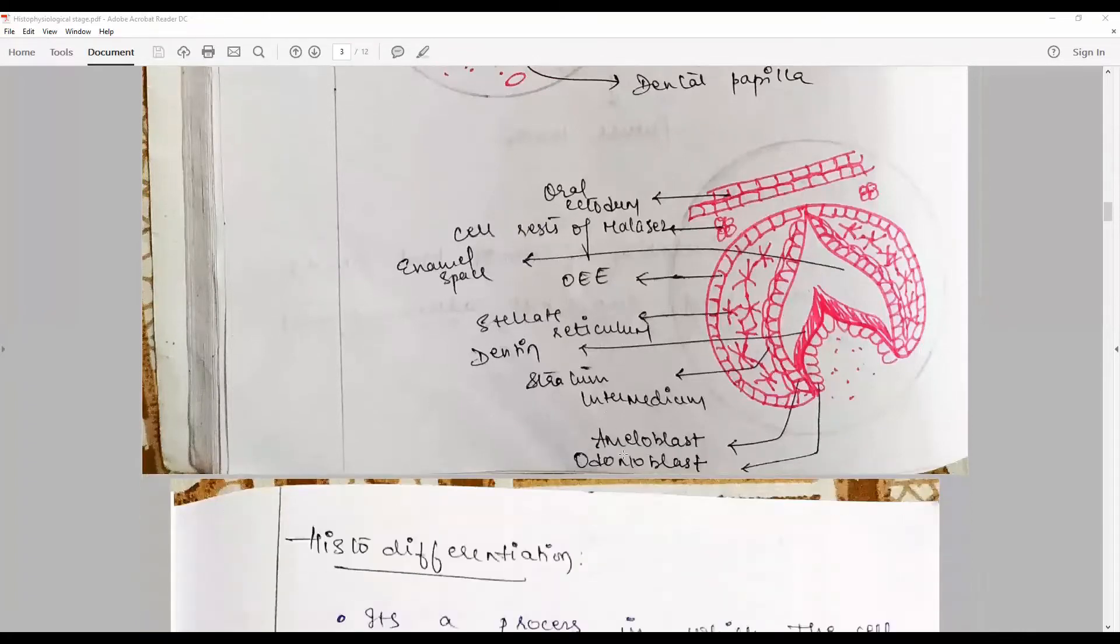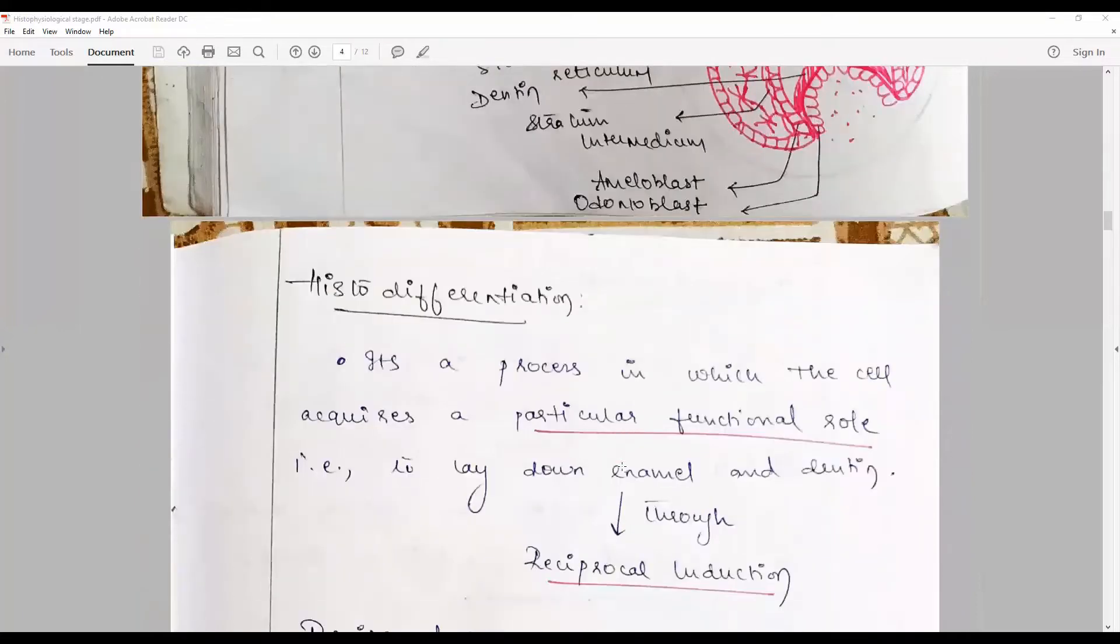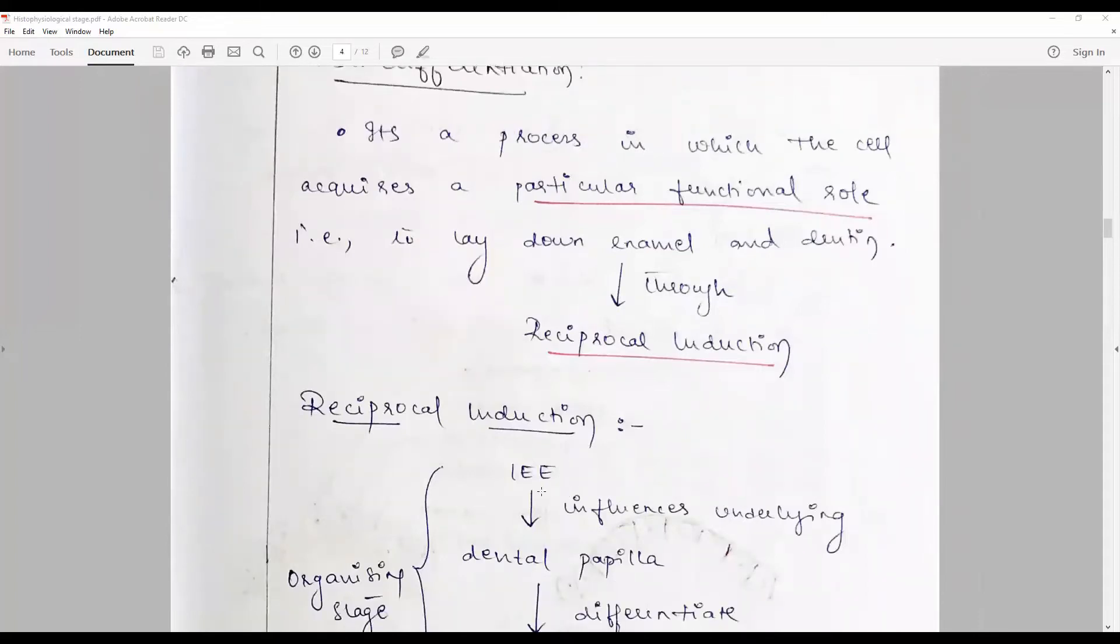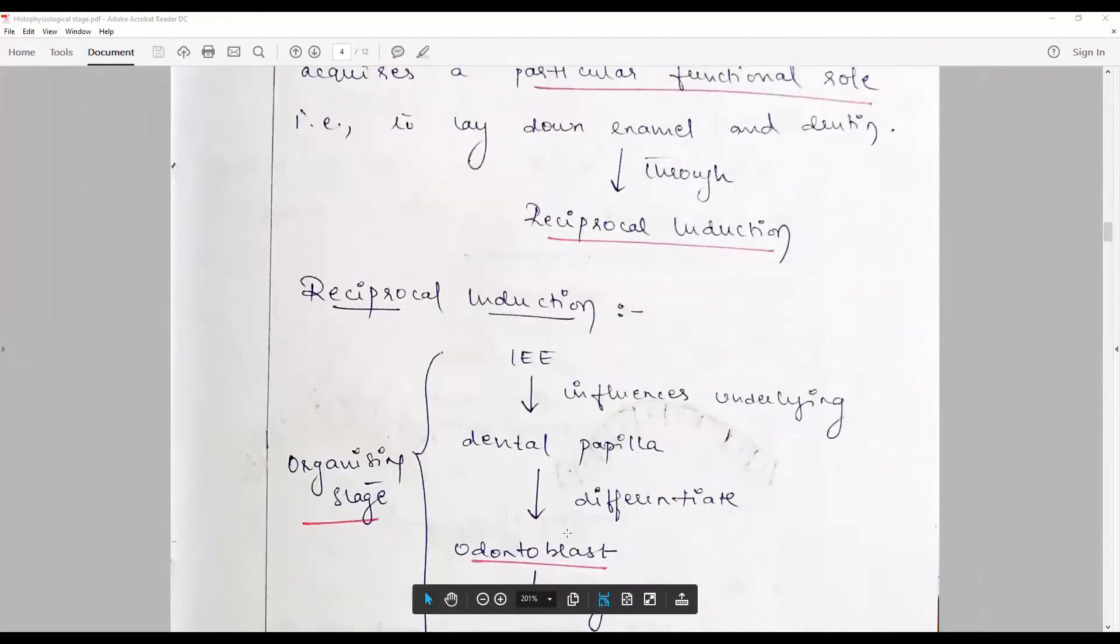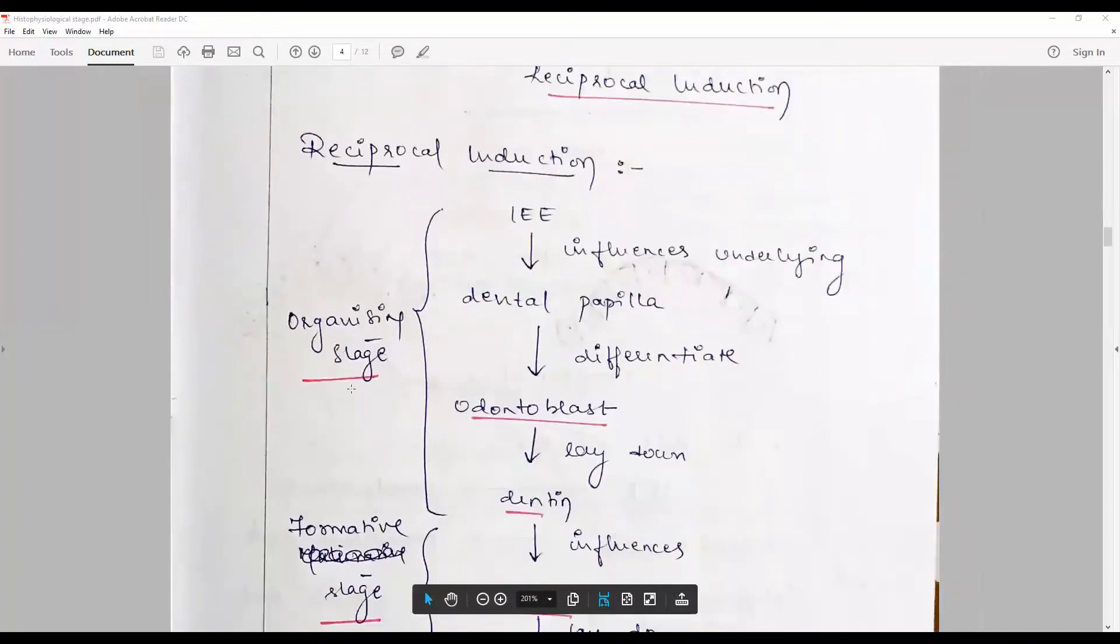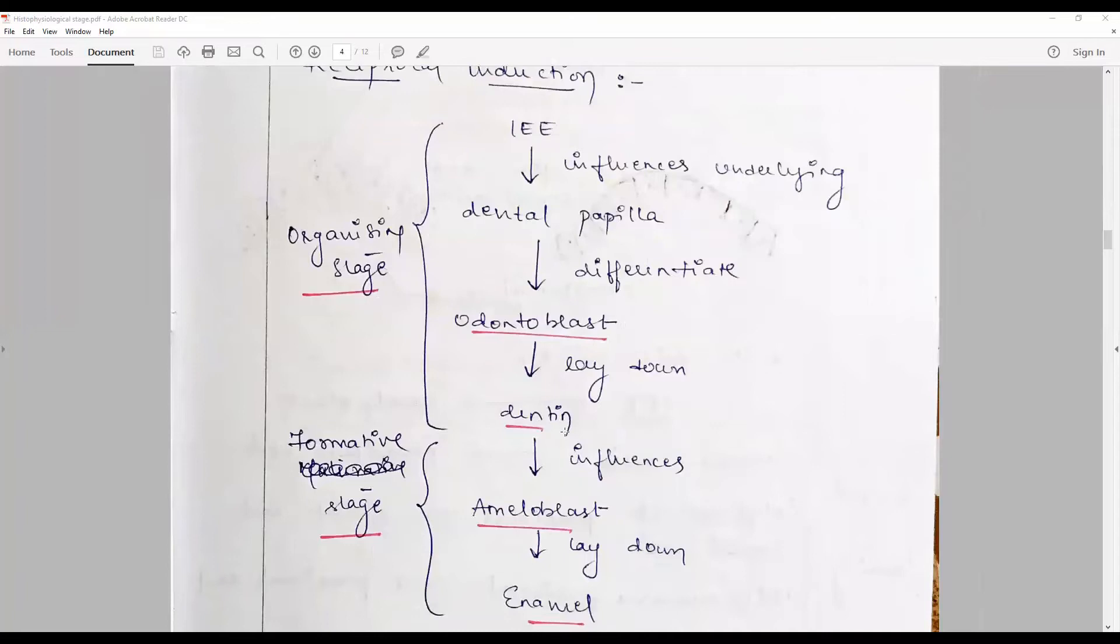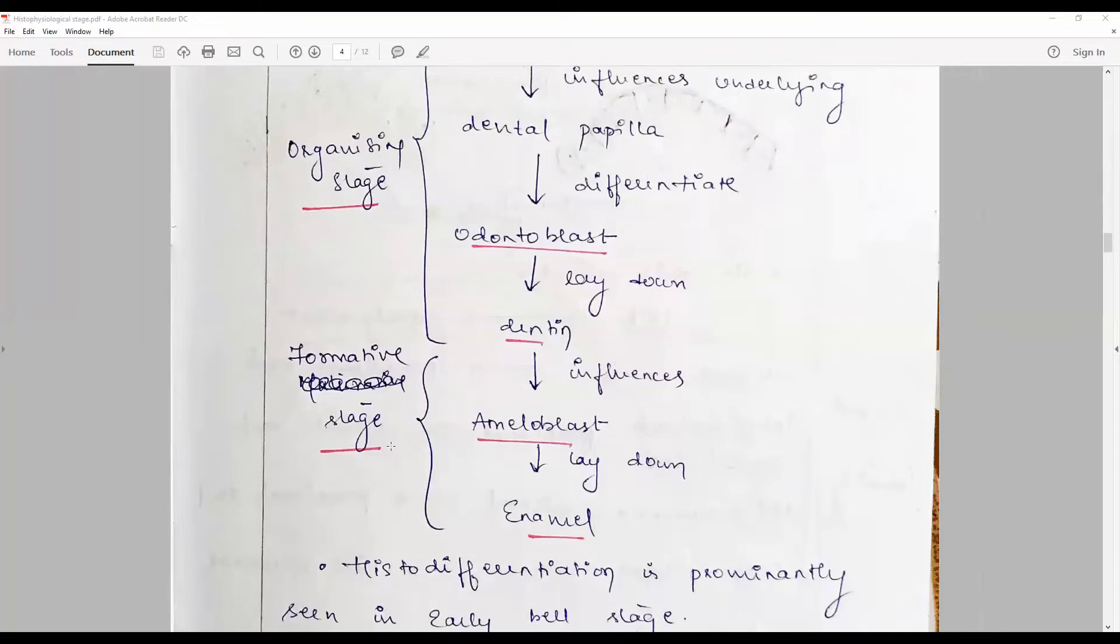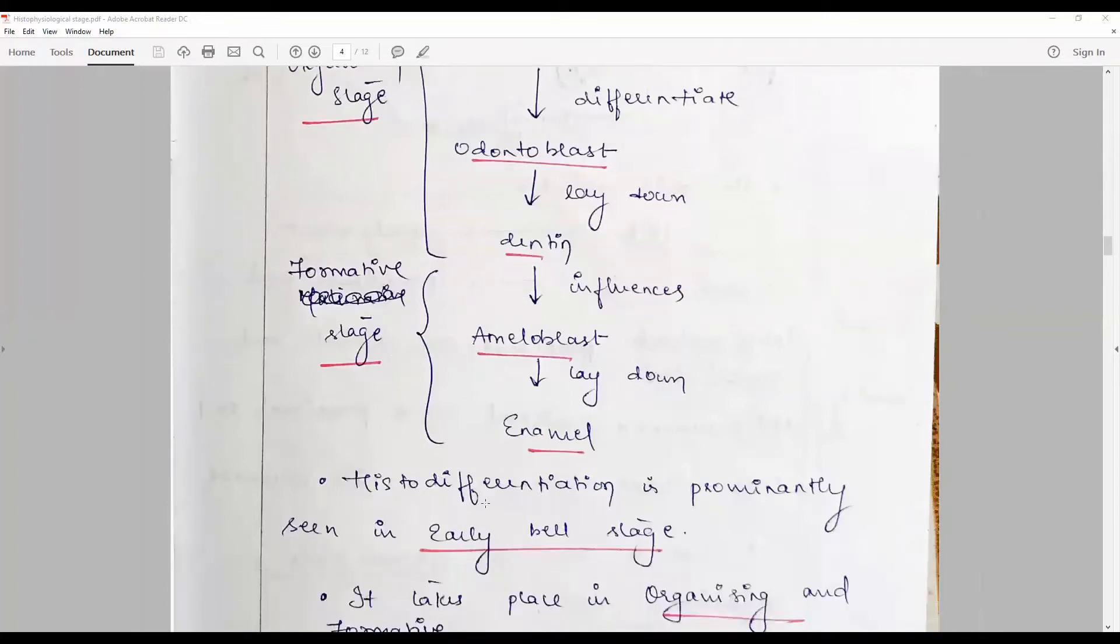Whatever you draw, highlight it, underline it, label it properly. Histo differentiation is the process with which cells acquire a functional role, and herein we say the laying down of enamel and dentine through reciprocal induction. Explain what is reciprocal induction: in early bell stage, the inner enamel epithelium influences underlying dental papilla that differentiates into odontoblasts that lay down dentine. This is the organizing stage of classic dentine. The newly formed dentine influences the ameloblasts, and ameloblast differentiation from inner enamel epithelium lays down the enamel. This is correlated with the formative stage and this histo differentiation is seen in the early bell stage.